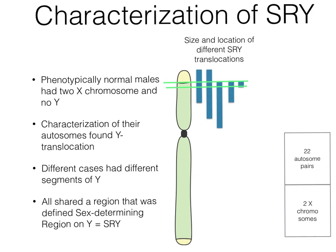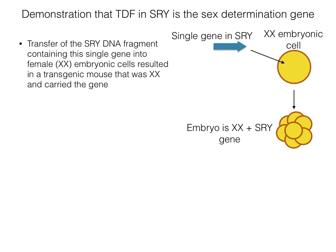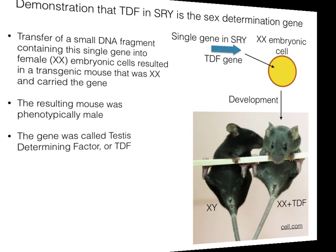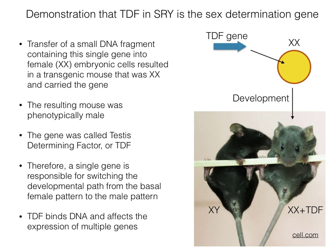Progressively, SRY was whittled down to a DNA segment carrying a single gene. A very similar gene, the ortholog, was found on the Y chromosome of mouse, providing the opportunity to test its functionality. Using genetic engineering techniques, the SRY DNA carrying the gene was introduced into the genome of a female XX embryonic cell, which developed into an embryo with two X chromosomes and the SRY gene. This in turn developed into a male mouse, as demonstrated by the presence of male sexual organs. The gene was called testes-determining factor, or TDF, sometimes also called the SRY protein.